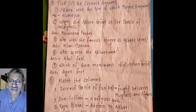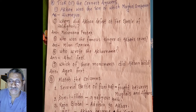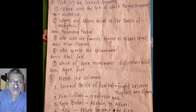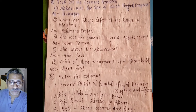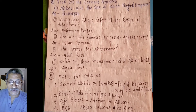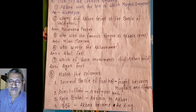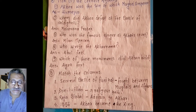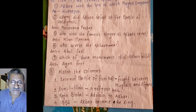Akbar was the son of which Mughal emperor? Answer: Humayun. Question number 2: Whom did Akbar defeat at the Battle of Haldighati? Answer: Maharana Pratap.